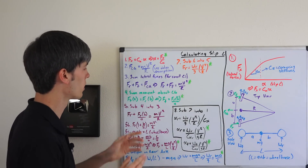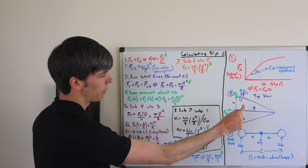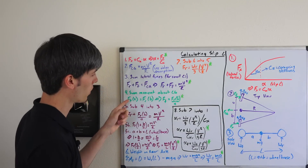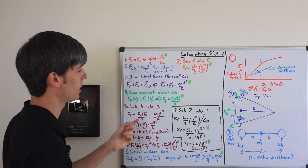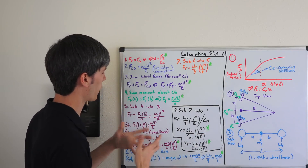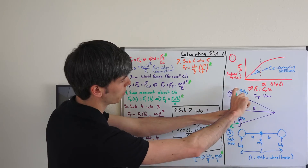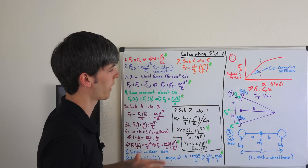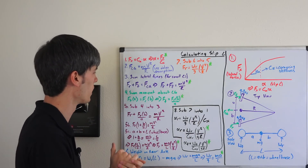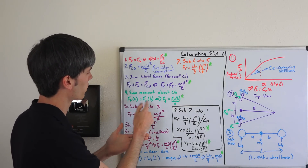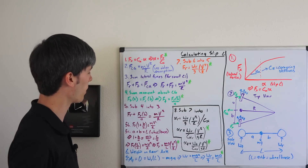Moving on to equation four, we sum the moments about the center of gravity. The force on the front times distance a provides a torque that must equal the force on the rear times distance b — otherwise the car would be destroying itself. So F_front times a equals F_rear times b, which gives us: F_front equals F_rear times b divided by a.